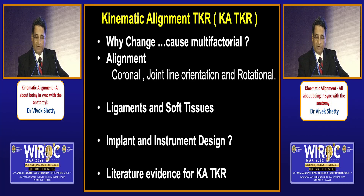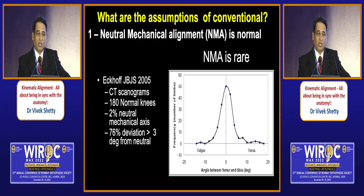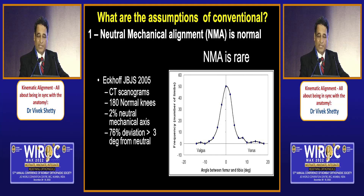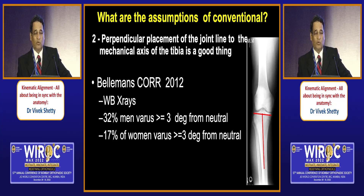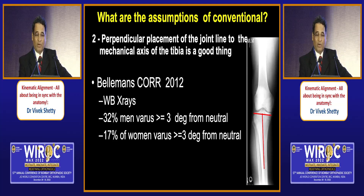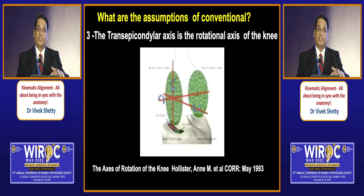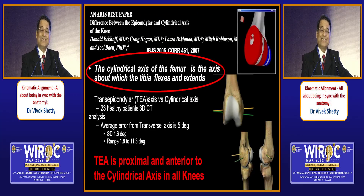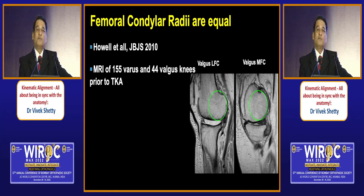Looking at the literature evidence for kinematic TKR: the neutral mechanical axis going to the center of the knee is not normal — Eckhoff's theory says most knees are on either side, with quite a few outliers. Regarding a perpendicular joint line, a Ranawat Award paper from 2012 showed the slope in 32 percent of cases is much more than three degrees. Regarding the trans-epicondylar axis — the rotational axis around which the tibia flexes and extends — evidence shows it is actually the condylar axis, which is cylindrical, with both condyles equal. The trans-epicondylar axis is proximal and anterior, confirmed with MRI studies.